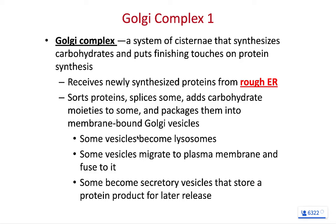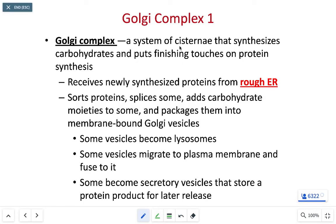Another organelle in our cell is the Golgi complex, sometimes referred to as the Golgi apparatus. The Golgi complex is a bunch of membranous sacs — cisternae. As we look at the cell, we can differentiate the Golgi apparatus from the smooth ER based on what these cisternae connect to.